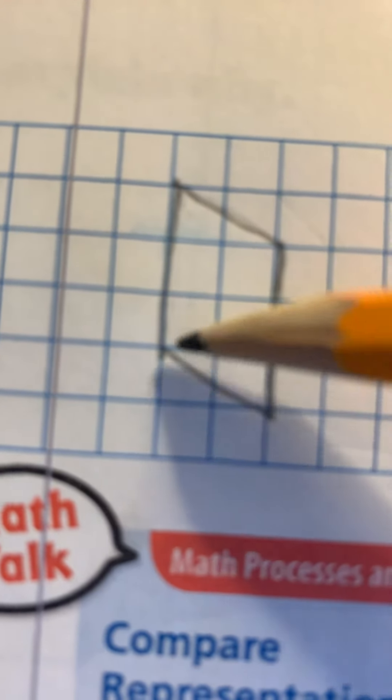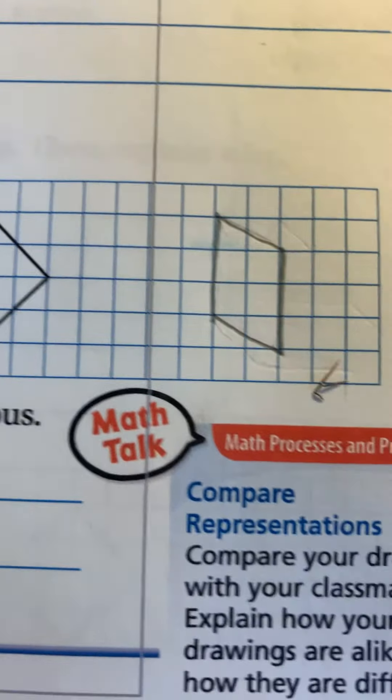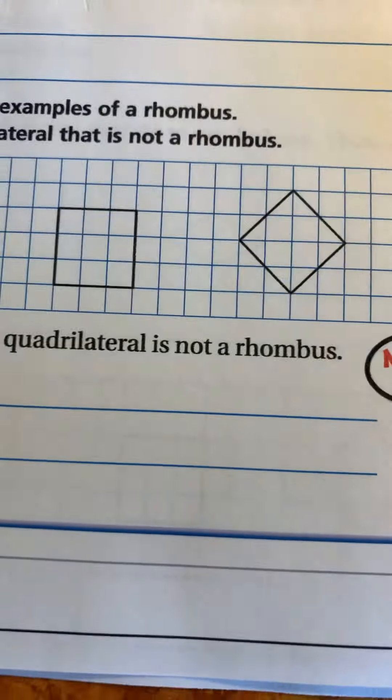We know that this quadrilateral is not a rhombus because these side lengths are longer than these side lengths. A rhombus would have all four sides being the same length, and this shape does not have all four sides the same length. So this shape does not belong with the other rhombuses.